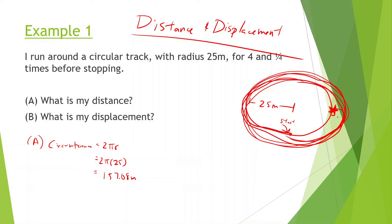However, if I'm going four times and a quarter, I'm just multiplying this by 4.25. And then we get our answer 667, or I'm just going to put 668 meters.